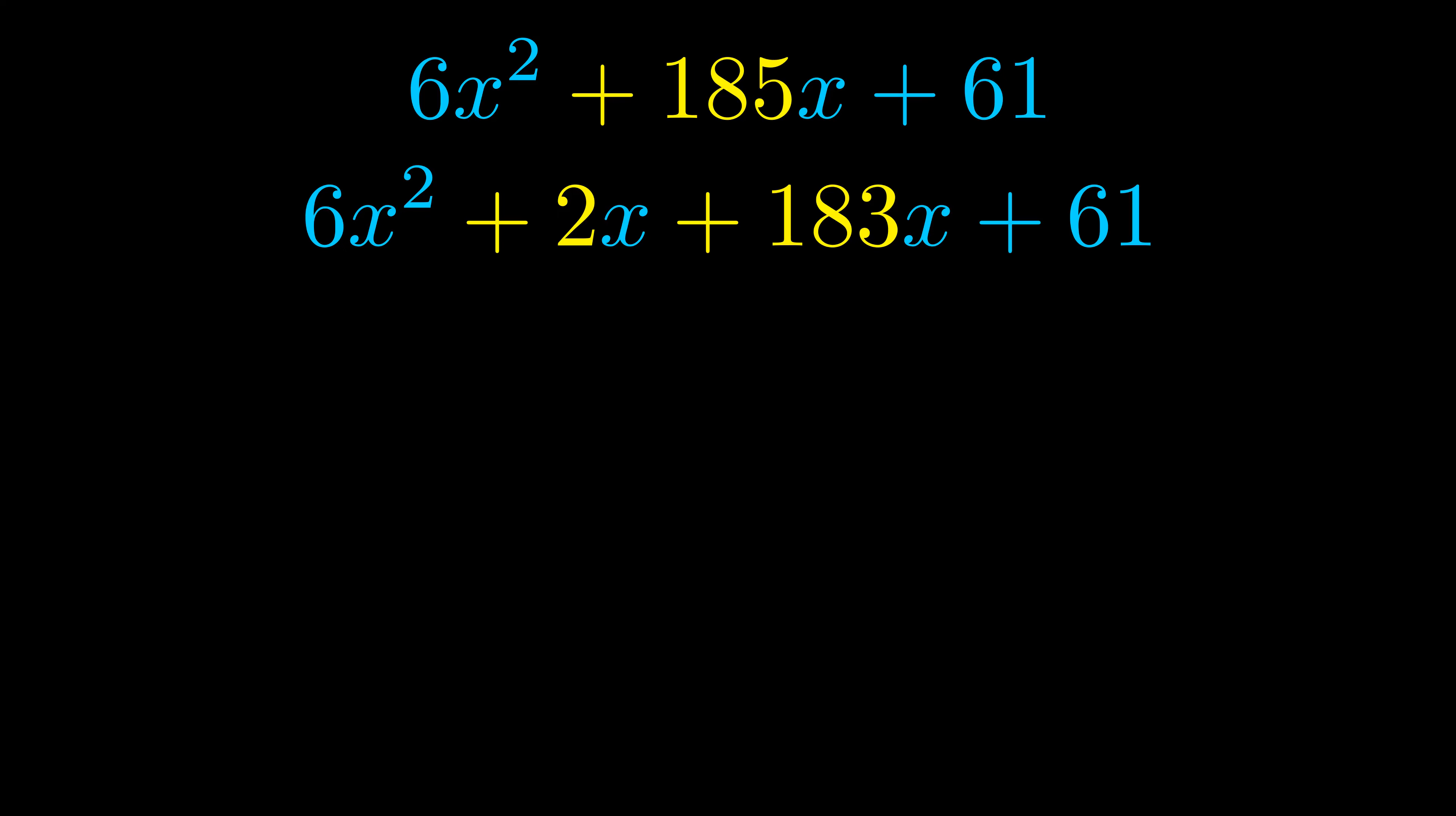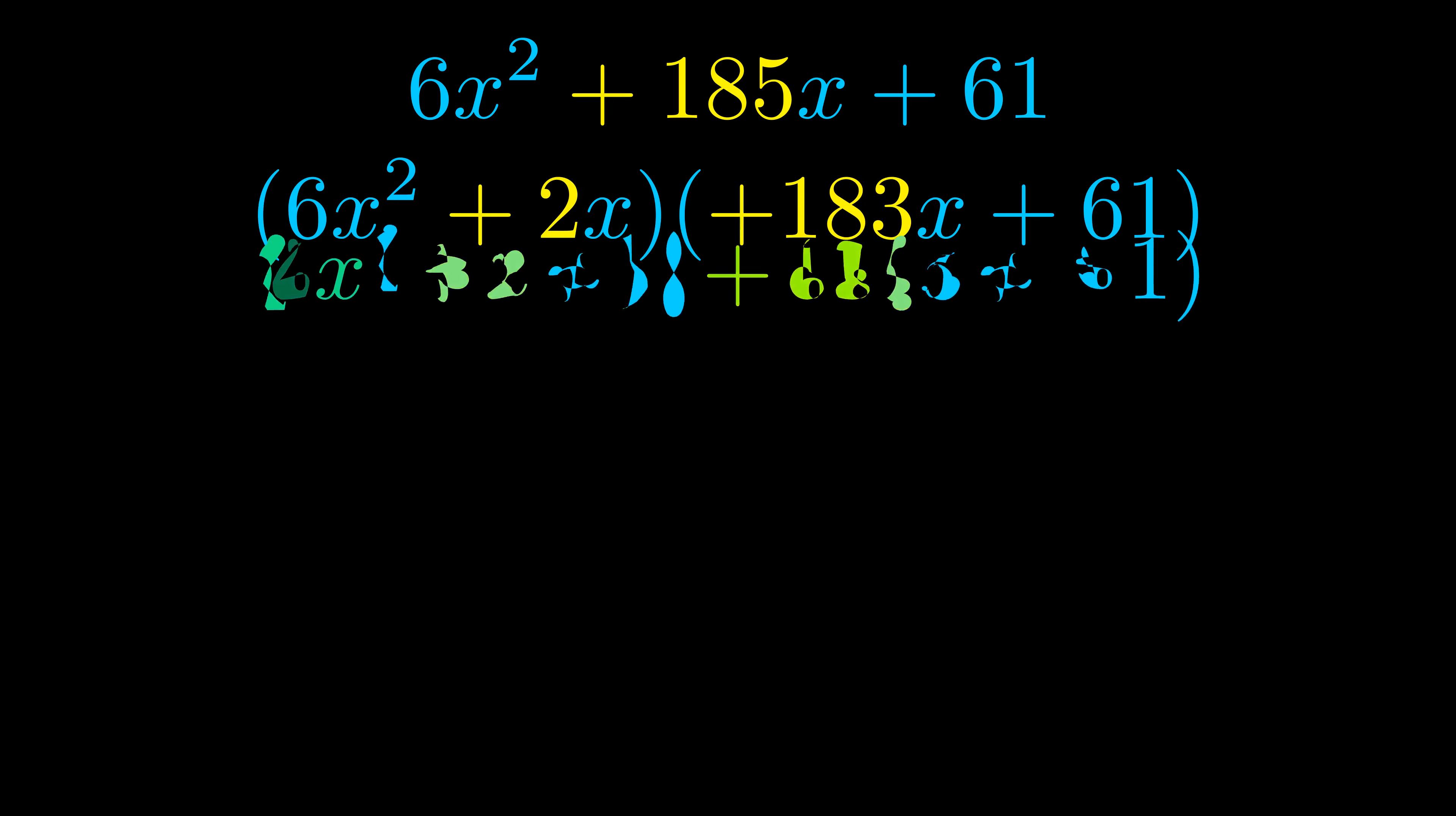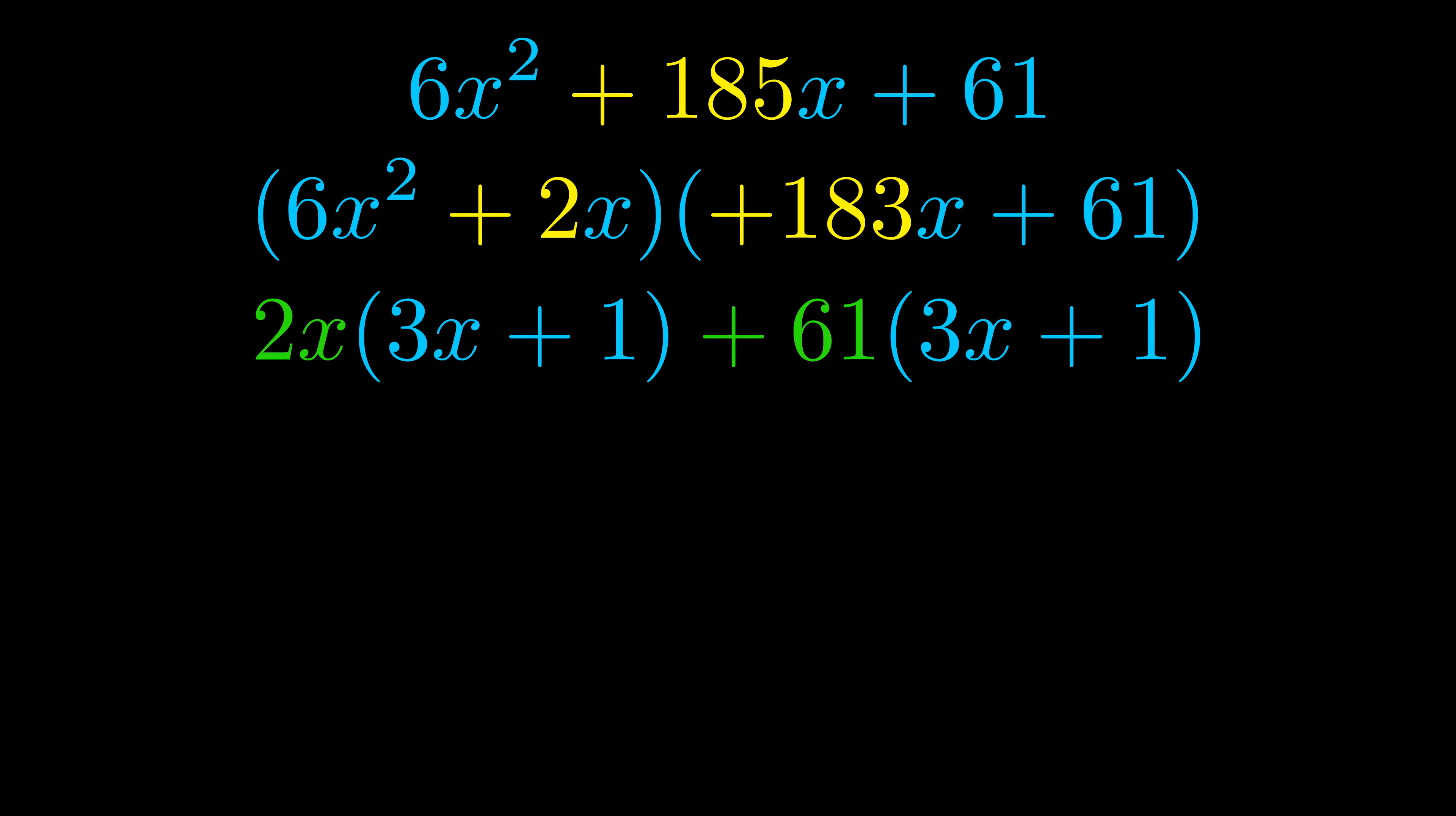Once we've done this we go ahead and we put parentheses around the first term in the last term. And we do that so that we can take the greatest common factor out of both terms. We can see the greatest common factor is now outside in green. Notice also how what remains inside of the parentheses is the same in both cases. The blue values are the same.